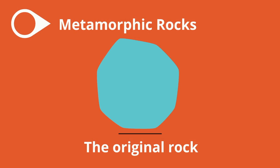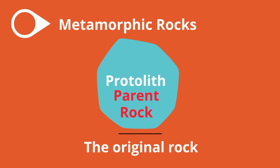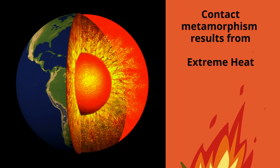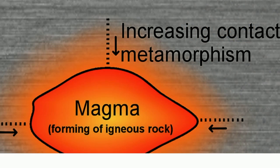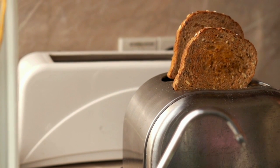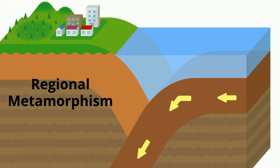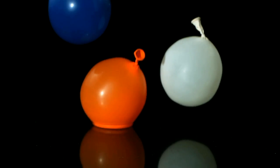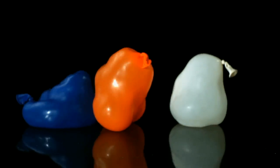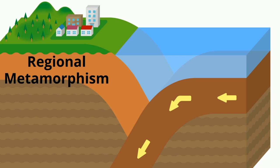The original rock is referred to as the protolith, but it is commonly referred to as the parent rock. Contact metamorphism occurs when existing rock comes into contact with extreme heat like magma found inside the earth — kind of like when toast is exposed to heat inside a toaster and is changed. Regional metamorphism is caused by extreme pressure that presses and squeezes the rock and transforms it into something new. This often occurs at convergent plate boundaries, where existing rocks are transferred into new rock.